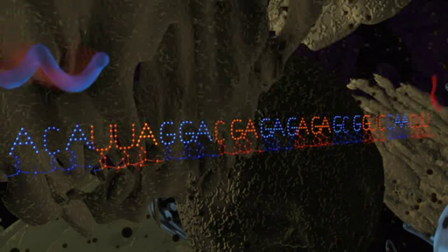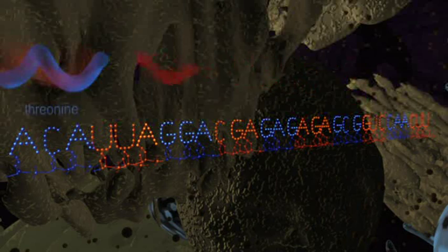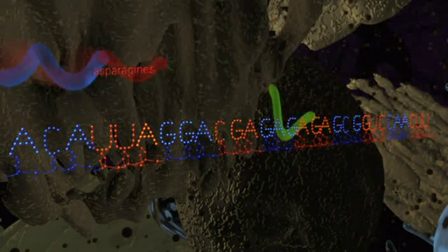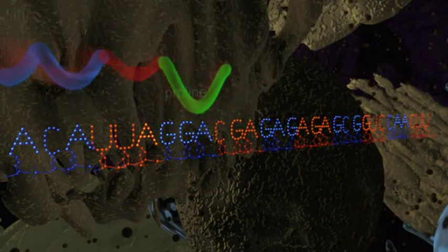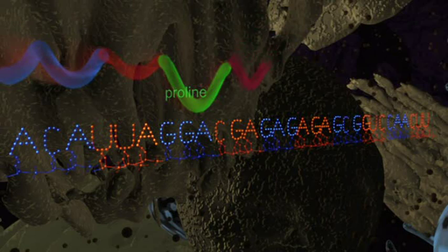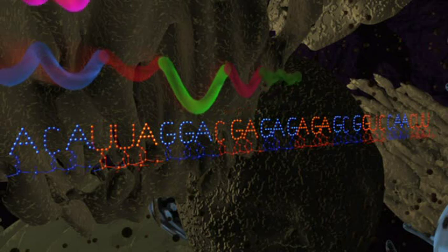A-C-A inserts threonine. U-U-A inserts asparagine. G-G-A inserts proline. C-G-A inserts arginine. G-A-G inserts leucinine and so on.